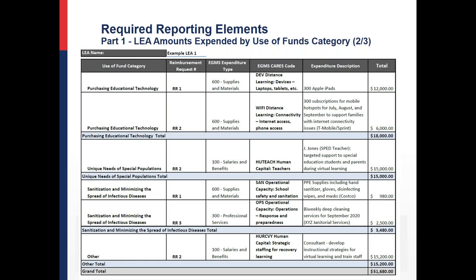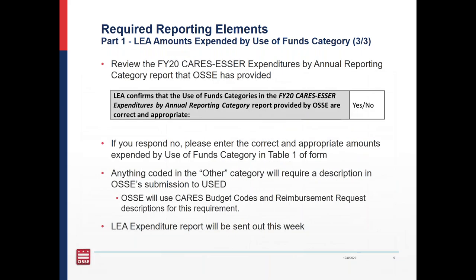For the most part, no changes should be required from our form because the CARES codes and EGMS reimbursement request descriptions are pretty detailed. If you agree with our breakdown, you'll select 'yes' in part one of the annual reporting form — there's a drop-down. You'll select yes if you agree, and then that's all you have to do for this section.